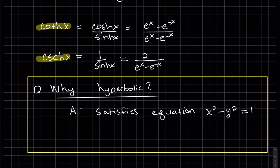So our trig functions satisfy the unit circle, x squared plus y squared equals one. And the hyperbolic sign satisfies x squared minus y squared equals one. And this is our hyperbola graph. So those points satisfy that equation.